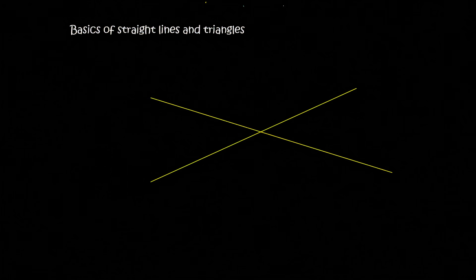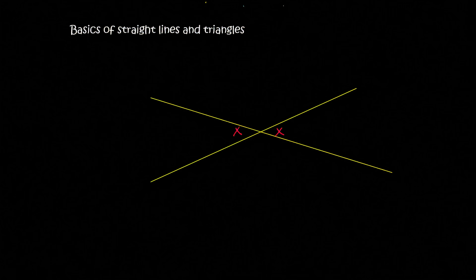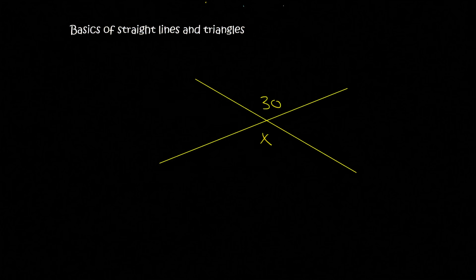Now here's something else. When we have lines that cross like this, you should remember that the angles opposite each other will always be the same. And so that also means that these two will be the same. We call that vertically opposite angles. So that means that if this is 30, then the one that's opposite would have to be 30 as well.